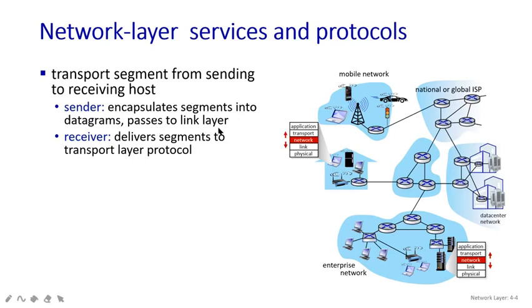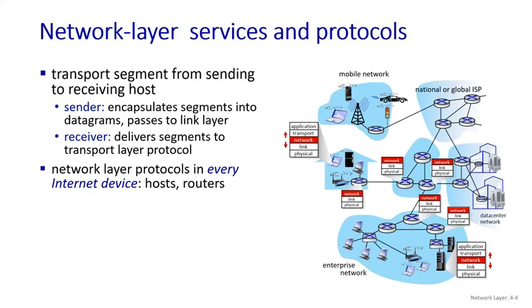Now what will happen at the receiver end? As the sender has sent the segments, in the receiver end the segments will get delivered. It delivers the segments to transport layer protocols. The network layer protocol is present in every internet device - in every router there is a network layer, and also in every host from one host to another host we are sending the segments.